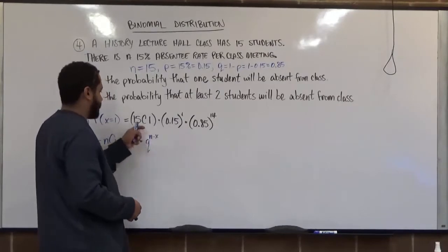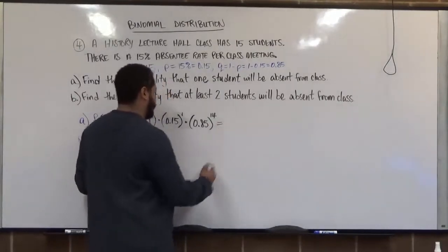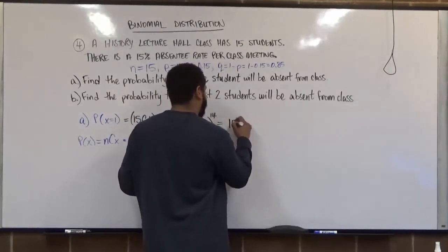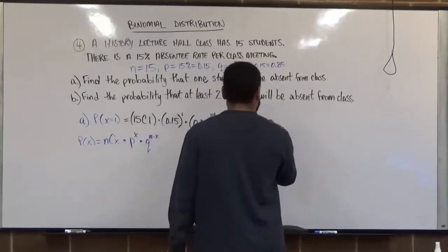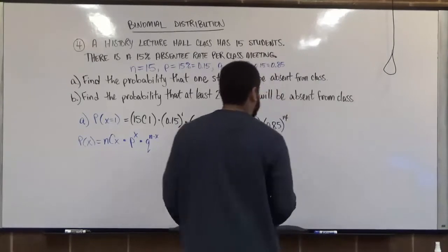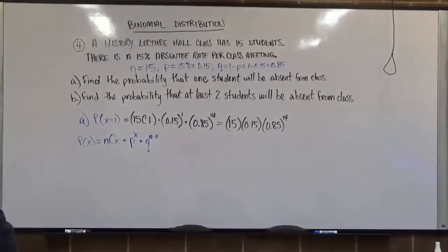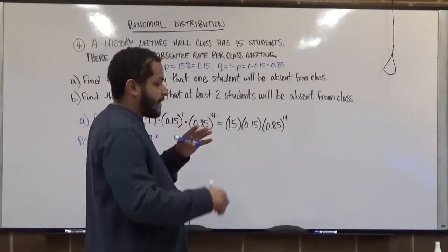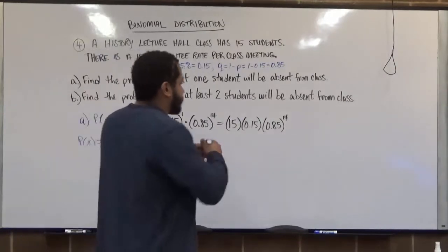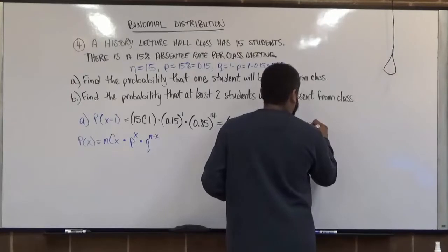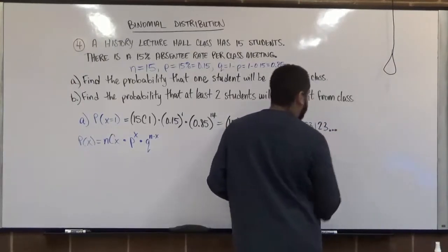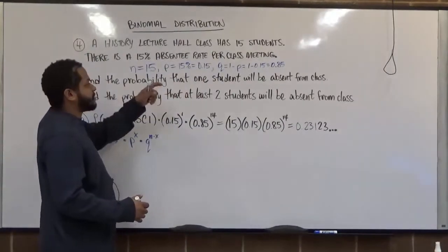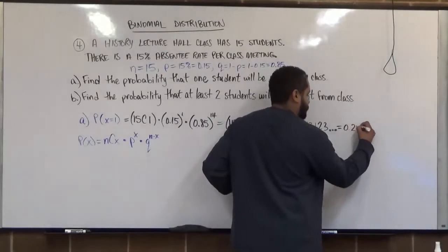Anything to the power of 1 is whatever's inside, and 15 combination 1 gives us just 15. You can run this on your calculator using the combination formula: 15C1. Here we have 15 times 0.15 times 0.85 to the power of 14. When you compute this, you'll get a long decimal number. Take this answer to at least 4 decimal places. We get 0.23123, and rounding to 4 decimal places, the probability that one student is absent is 0.2312.